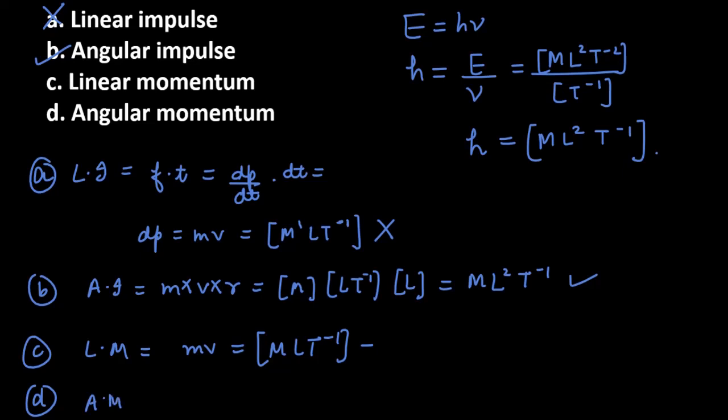What is angular momentum? It is mvr. For angular impulse, the dimensions are also ML² T⁻¹. So angular impulse and angular momentum have the same dimensional formula. You can see that b and d are the correct options out of these four.